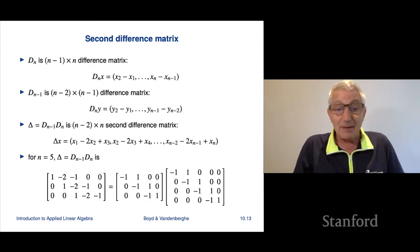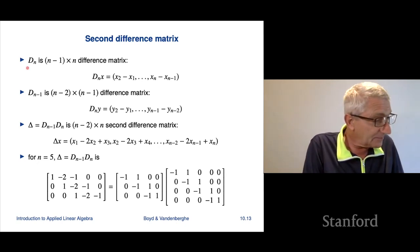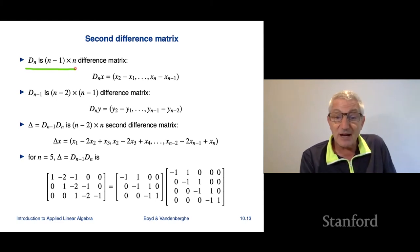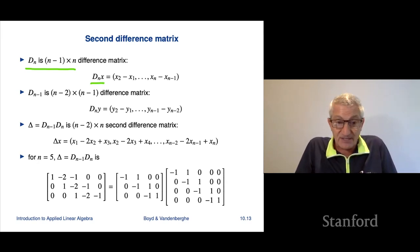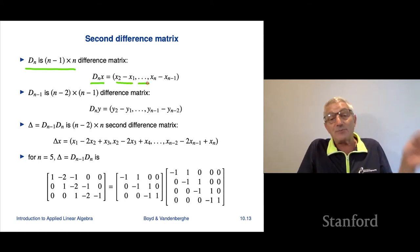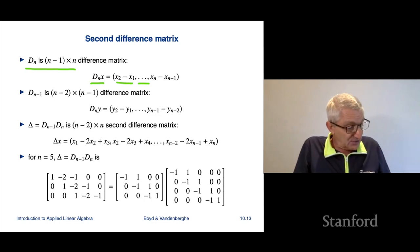So let's look at an example. And an example is we're gonna start from an example we saw a few lectures ago, a few chapters ago, which was on the difference matrix. So now remember that Dn is this n minus 1 by n difference matrix. And here it is. What it does is it produces when you multiply this matrix by a vector, what you get is the vector of first differences. So it's the second minus the first entry, the third minus the second, all the way up to the last minus the penultimate entry. So that's called the difference matrix.